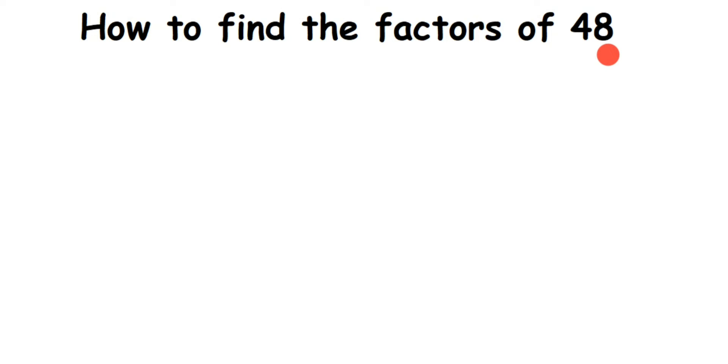The one which I'm going to explain is very simple. We have to check if the number from 1 to 10 is divisible. Divisible means 48 comes in a table from 1 to 10, that's it.